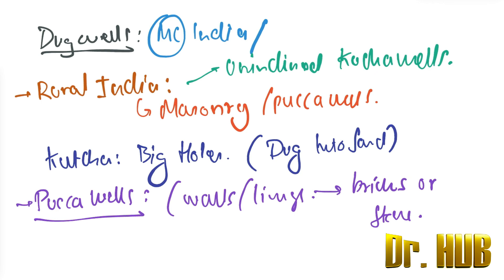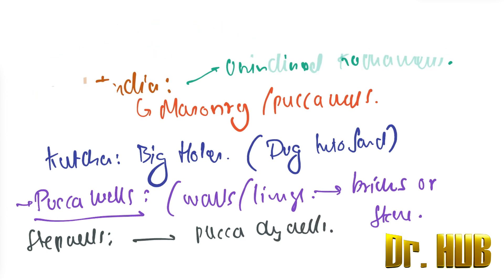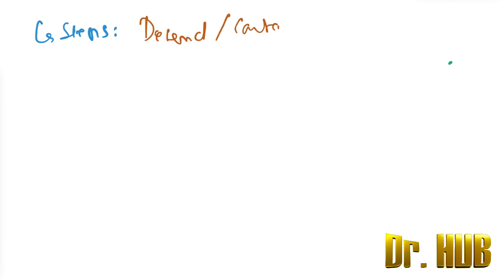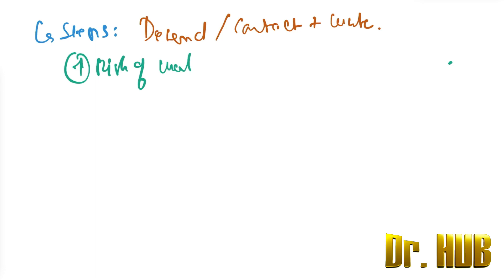Step wells are a type of paka dug well. They have steps which can be used by people to descend into the well and come in contact with the water, which increases the risk of water contamination.